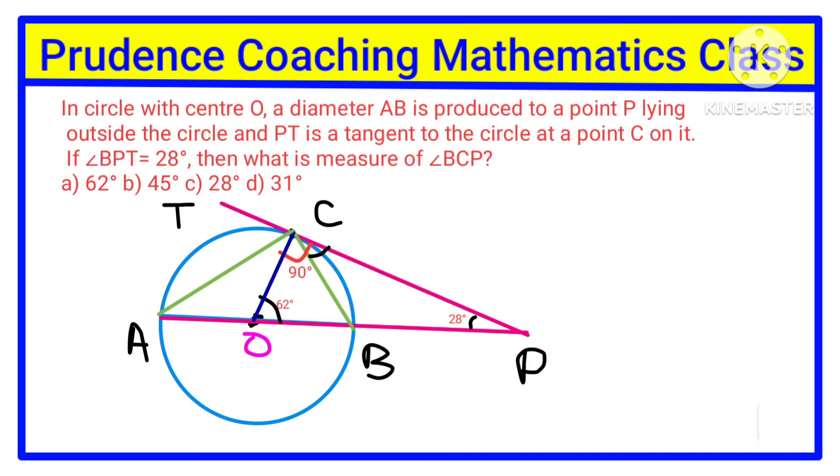If we join line AC, we get angle BAC and angle BOC on segment BC. COB is the center angle and CAB is the angle on the circumference. The angle on the circumference is always half the angle made at the center by a segment. So angle CAB is 62 by half, that is 31 degrees.